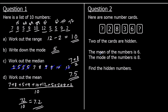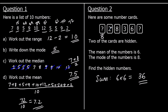Question two: we've got some number cards and two cards are hidden. The mean of the numbers is six and the mode is eight. There are six numbers, so they must add up to six times six, which is thirty-six. The mode is eight, so there must be at least one more eight. With one hidden card being eight: eight plus two is ten, plus eight is eighteen, add three makes twenty-one, add six makes twenty-seven. We need thirty-six, and thirty-six take away twenty-seven is nine. So the two hidden cards must be eight and nine.